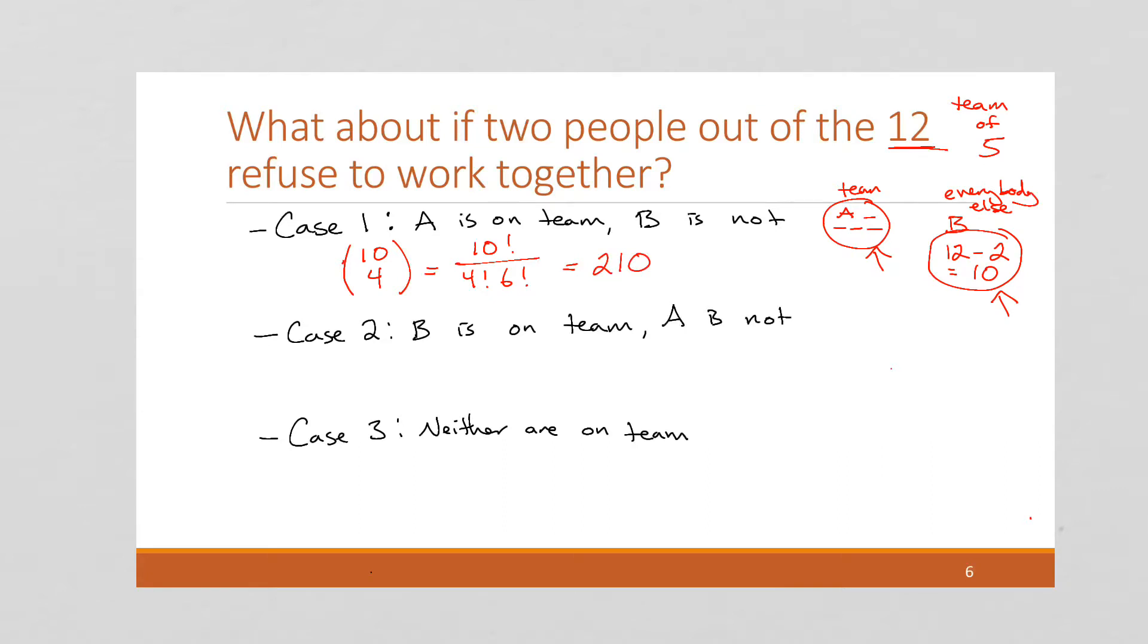Now, for case 2, it's going to be the exact same, except we're just going to change the position. We're going to have B there and A in here. But otherwise, it's going to be the same. So we're going to have 10 choose 4. And this is equal to the same thing.